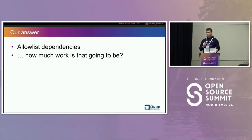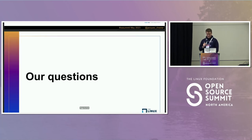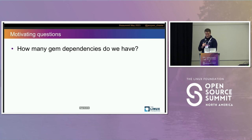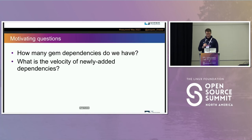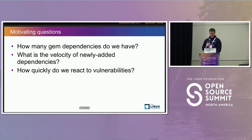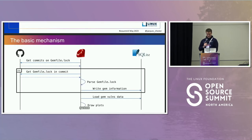There's a lot of dependencies, so we had some questions. First of all, how many dependencies do we have right now in RubyGems, not speaking of all the other things we have? What is the velocity — at what pace do new dependencies get added to the estate? And as a bonus question, how quickly do we react to vulnerabilities?